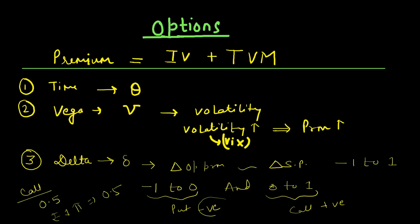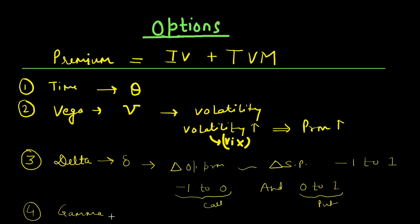Why is delta negative for put options? In the case of a put option, it works in the reverse manner — if the stock price goes up, the value of the put goes down, which is why it is denoted as negative. The fourth factor which affects time value of money is gamma, denoted with its symbol. Gamma measures the change in the value of delta due to the change in stock price.